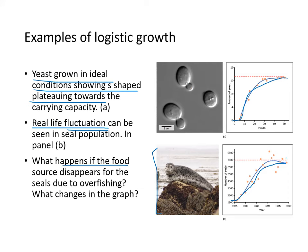If the food source disappears for seals — for example due to overfishing — the carrying capacity will change and the seal population will adapt accordingly.